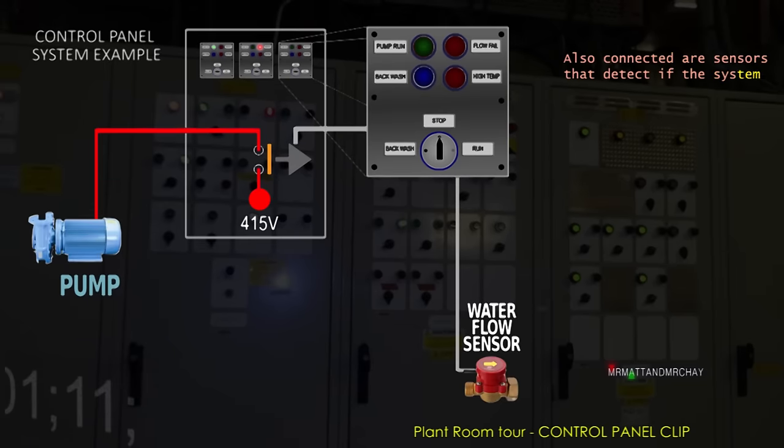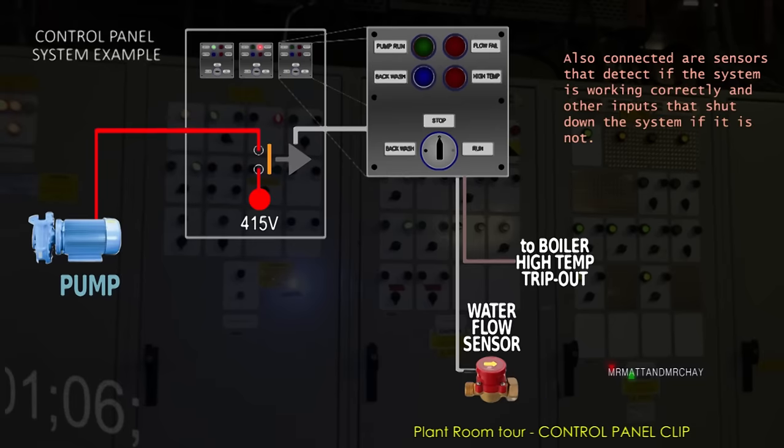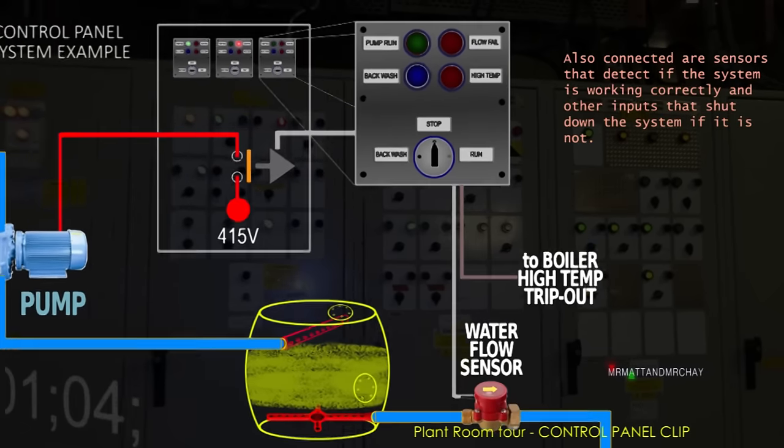This one detects a healthy flow of water, and this one stops the pump should the boiler go into an overheat condition. Let's switch it on.